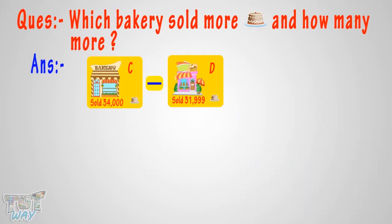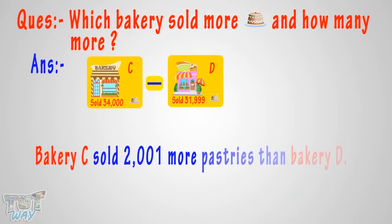So our answer is: Bakery C sold 2,001 more pastries than Bakery D. Now let's take another example.